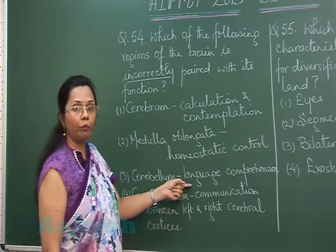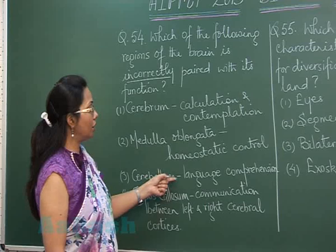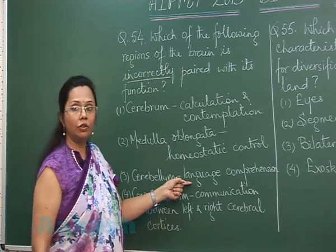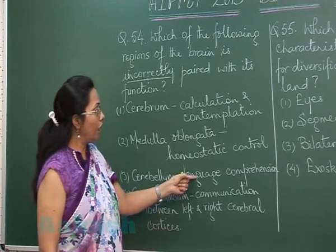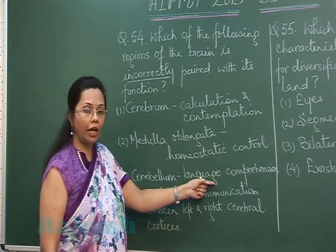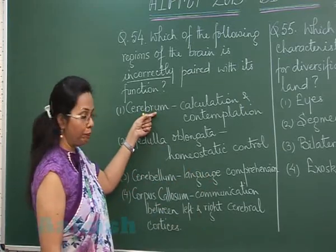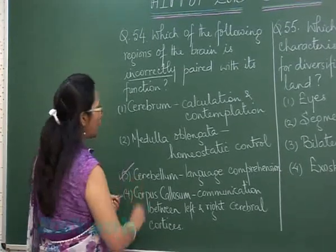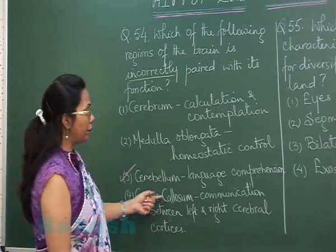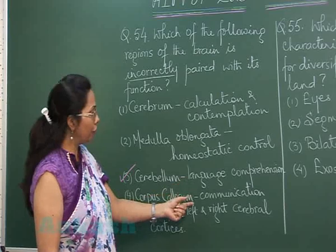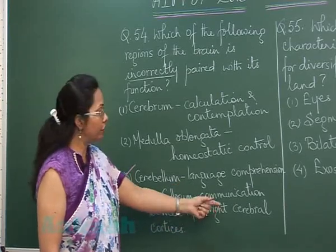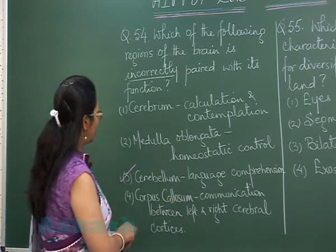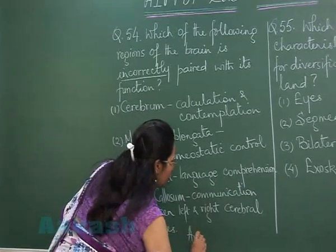Cerebellum — language comprehension. This is wrong because the cerebellum is the region for maintaining balance and posture. Language comprehension is a function of the cerebrum. So this is incorrectly paired. Corpus callosum is a thick band of nerves which connects the right and left cerebral cortices — that is correct. So the answer is option 3.